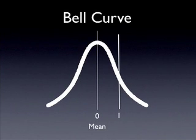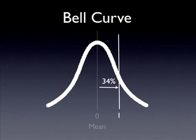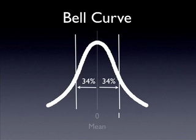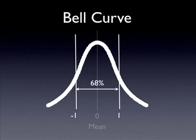Imagine we have an observation that's one standard deviation away from the mean. If we wanted to know the probability of an observation being between zero and one standard deviation away from the mean, you look that up in the back of your book, and the value there should be 34%. The bell curve is symmetrical, so the area from zero to negative one standard deviation away from the mean is also 34%. The area between negative one and one standard deviation away is 68%.